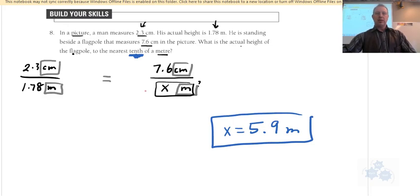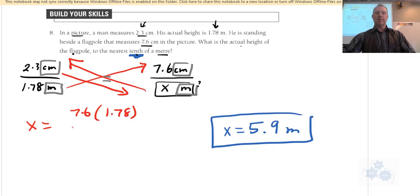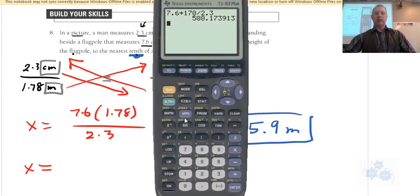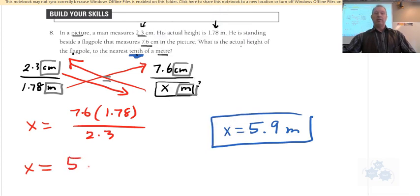So watch what happens here. I am going to do the same thing. I'm going to put the x up there. I'm going to put the 1.78 up there. I'm going to leave that as 1.78. I'm going to put the 2.3 down here, so that I have x equals, I have 7.6 times 1.78, and I'm dividing by 2.3. And so if the units on top are the same, and the units on the bottom are the same, check out what happens here. So 7.6 times 1.78 divided by 2.3 gives us, look at that, 5.8817, which is our 5.9, and you see what the unit was at the beginning? Meters.